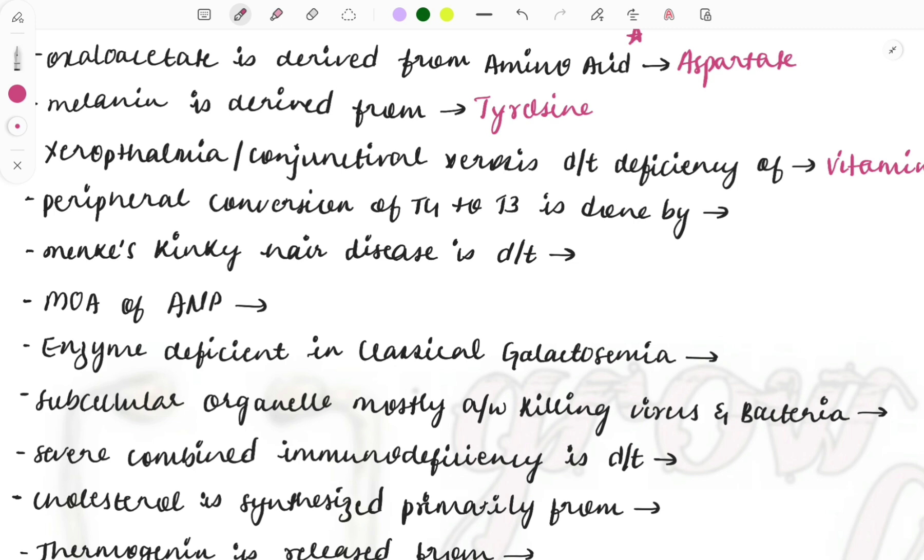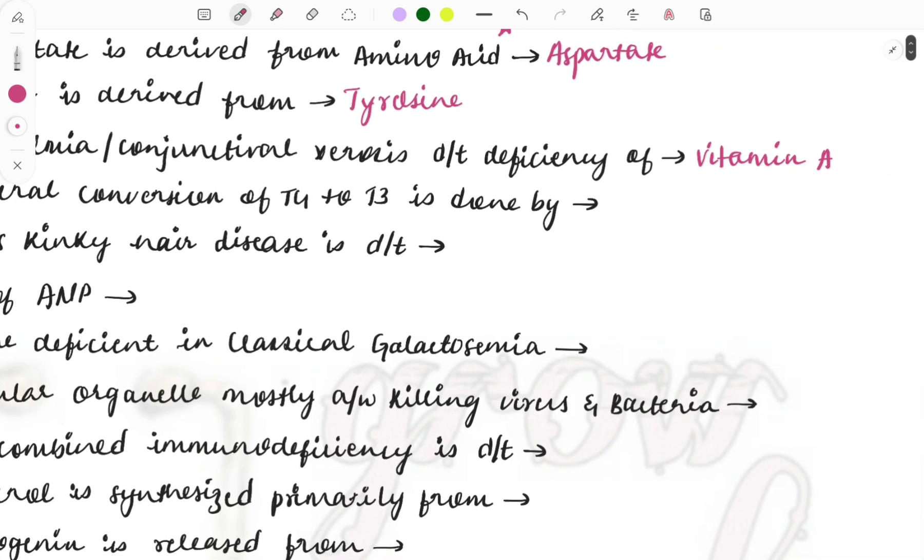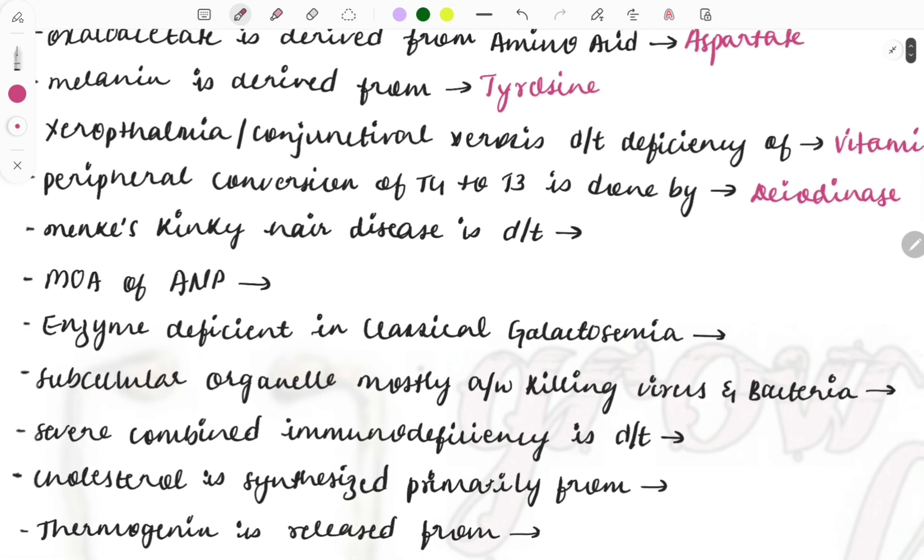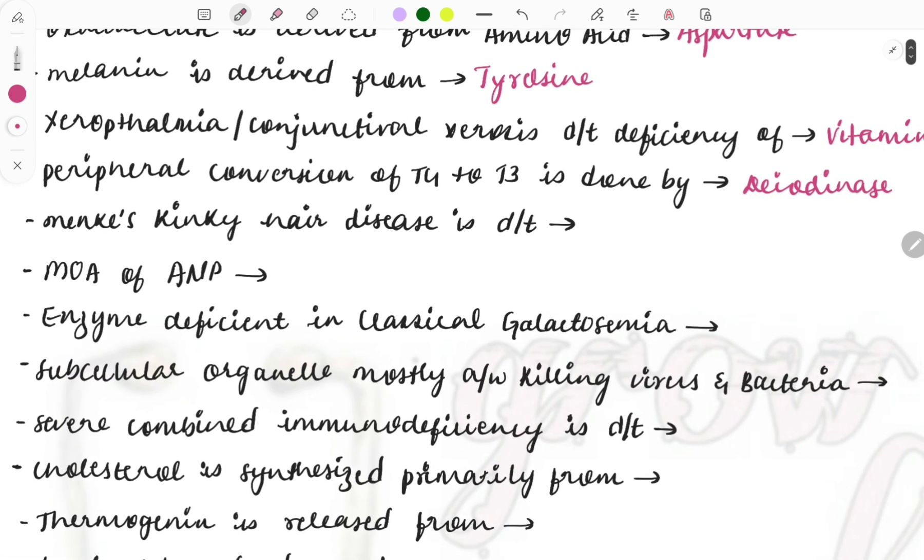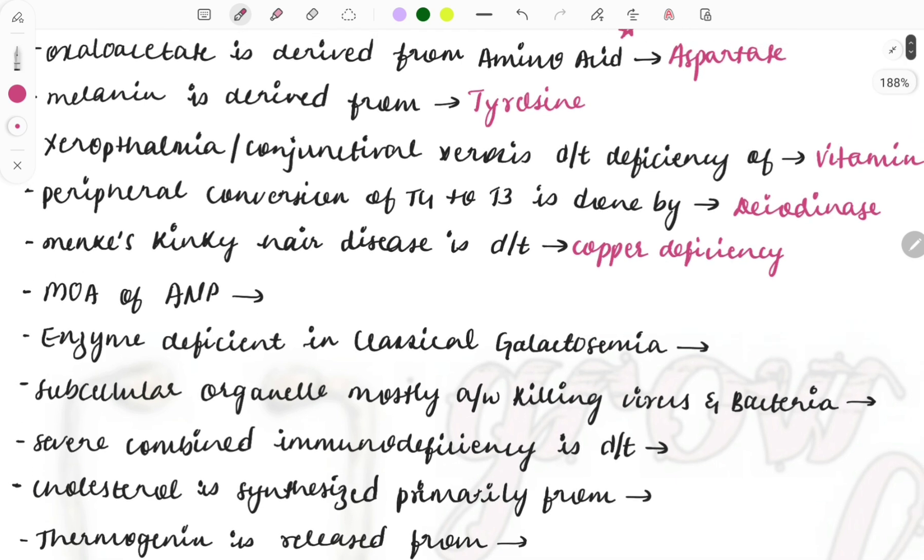Peripheral conversion of thyroid hormone T4 to T3 is done by which enzyme? It is deiodinase. Next question: Menkes kinky hair disease is due to deficiency of which mineral? It occurs due to copper deficiency.